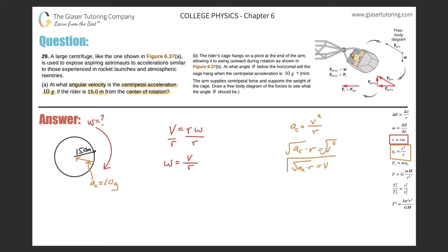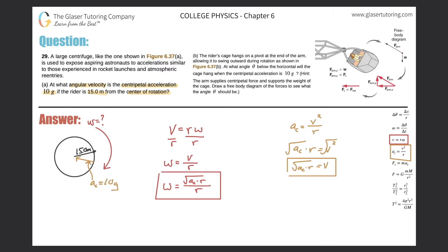I can take this result and plug it in for v. So angular velocity equals the square root of the centripetal acceleration multiplied by the radius, all over the radius. That's now my formula. The centripetal acceleration is 10 g's — and g is 9.8 — so we can easily calculate this. Angular velocity equals the square root of 10 times 9.8, times the radius of 15, all divided by 15.